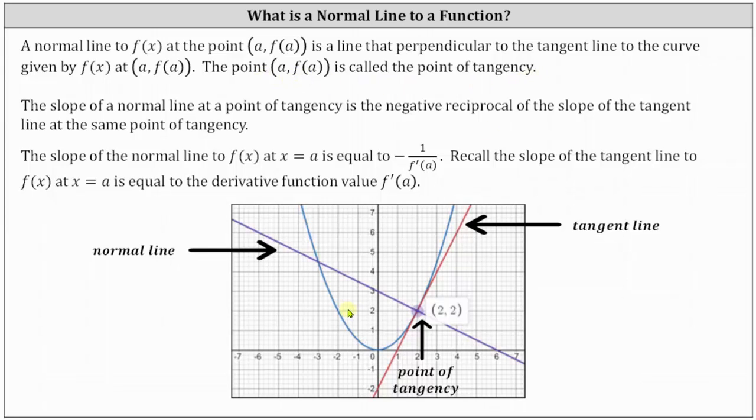Looking at the graph below we have the blue curve given by f(x). The red line is a tangent line which is tangent to the curve at the point of tangency, which in this case is the point (2, 2).